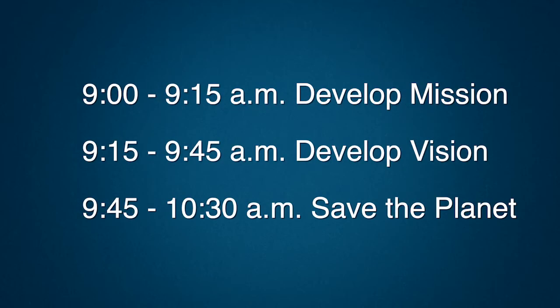Start by ditching the traditional format of the agenda — the one with time slots on the left and topics on the right. Placing time frames on each topic, such as 9:00–9:15 develop mission, 9:15–9:45 develop vision, 9:45–10:30 save the planet, is a sure way to limit people's thinking and conversation.